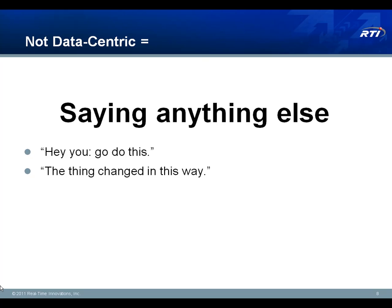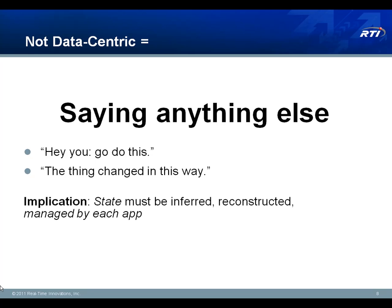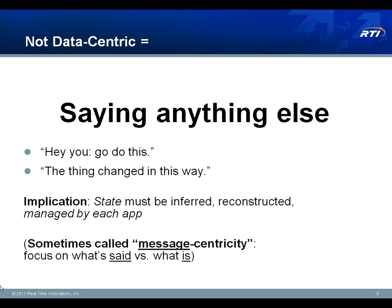This causes a lot of coupling between applications, and it also means that each application is going to be responsible for inferring and reconstructing the state that it cares about, independent of other applications. You might hear the word message-centricity — this is what we're talking about: a focus on what's being said in the dialogue between different components, rather than on what is — what the status of those components is.